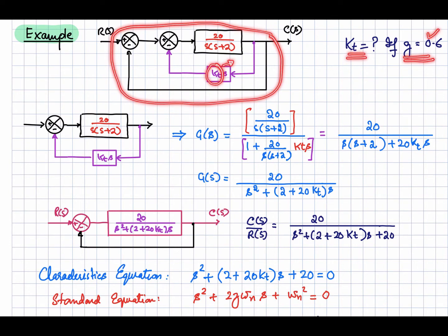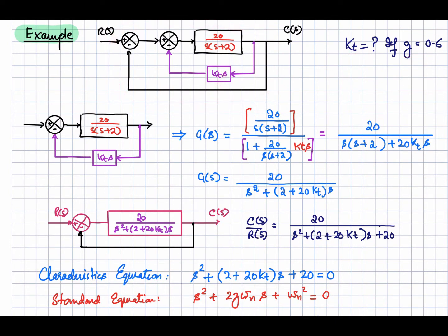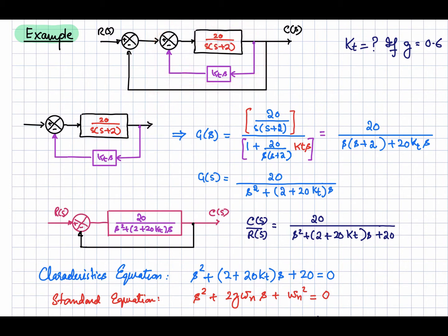First, consider this inner loop — it's a feedback loop, so we are going to find out its net transfer function: feed forward transfer function divided by 1 plus the loop gain. The loop gain of this one is 20 divided by s(s+2) times kt·s. This is the open loop transfer function, and this is the feed forward transfer function for this loop.